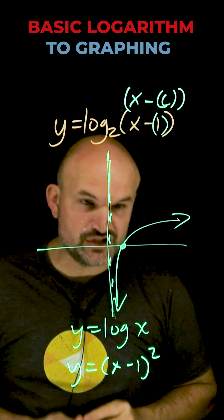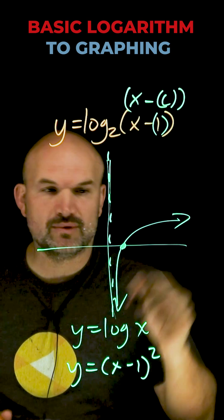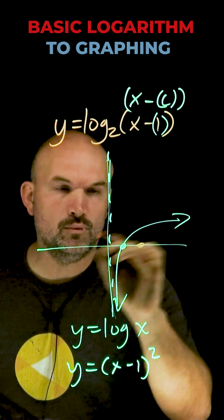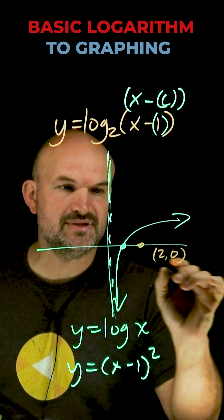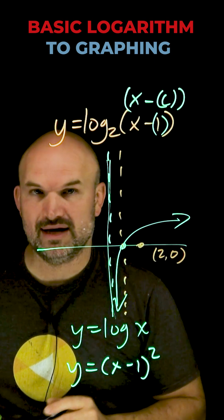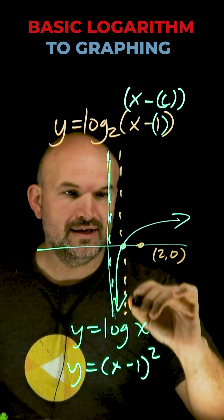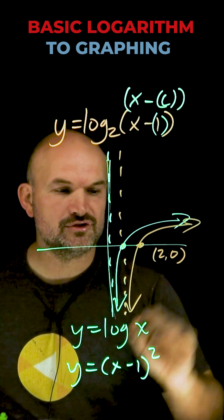So what I'm simply going to do is shift this graph one unit to the right. I'm going to move my x-intercept one more unit over, so that's going to be (2, 0). And I'm going to move my vertical asymptote one unit to the right, which will now be at x equals 1. Now I can graph my horizontal transformation.